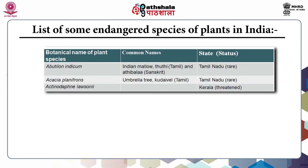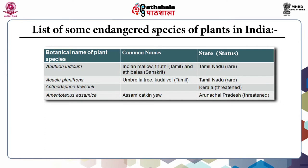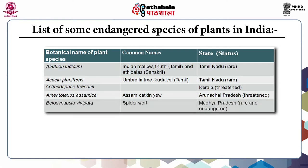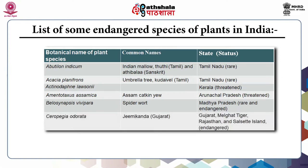Asam Katkinu is found in Arunachal Pradesh and its status is also threatened. Spider Wort is found in Madhya Pradesh and the status of this plant is also rare and endangered.